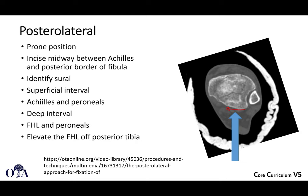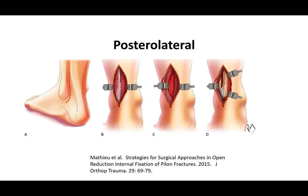The incision is midway between the fibula and the Achilles tendon. Once you retract the more superficial structures, you move the FHL over to get to the posterior tibial fragment. You can also access the posterior fibula through this same approach, making it another way to fix the fibula through a single incision.